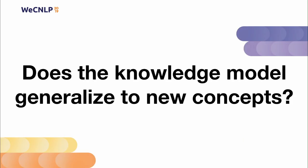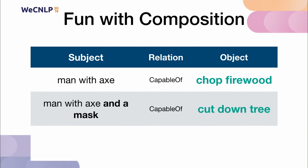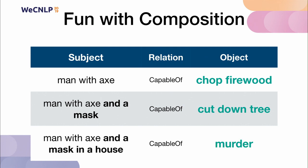The last question is: does the knowledge model generalize to new concepts? Given a subject such as 'man with axe' and asking what he's capable of, we might be unsurprised to see he's capable of chopping firewood. If we then give him a mask, he's capable of cutting down a full tree — protective headgear, very important. But what happens if we put him in a house? All of a sudden the model predicts he's capable of murder, which is what we'd expect from a man with an axe in a house.